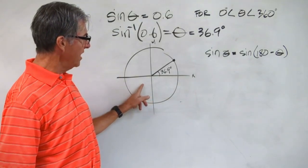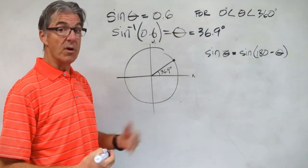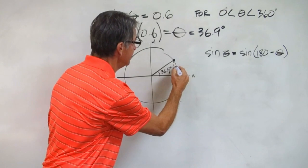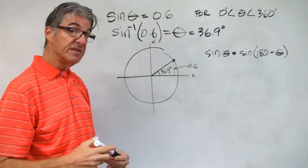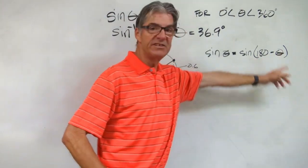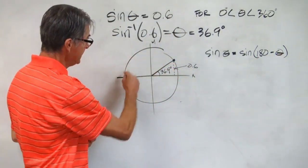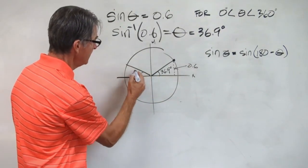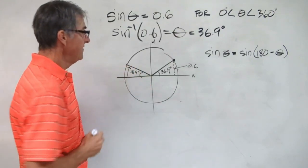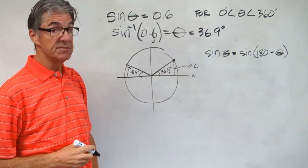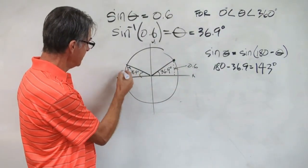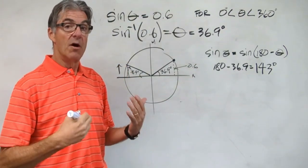Here's a unit circle diagram with my 36.9 degrees. Sine of the angle is this distance — that is my 0.6. Now, in our previous lesson, we got this identity that sine theta is the same as sine of 180 minus theta. So 180 minus theta would be right there: 180 minus 36.9 gives us 143 degrees, and that's going to be the same distance up off the x-axis — another 0.6.